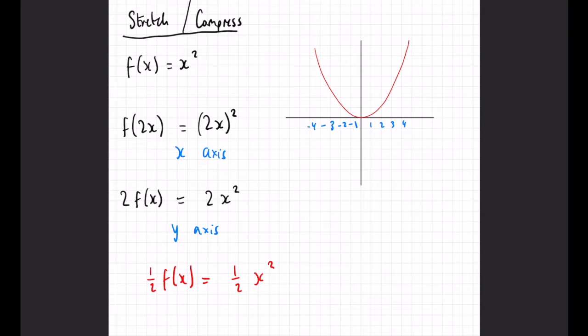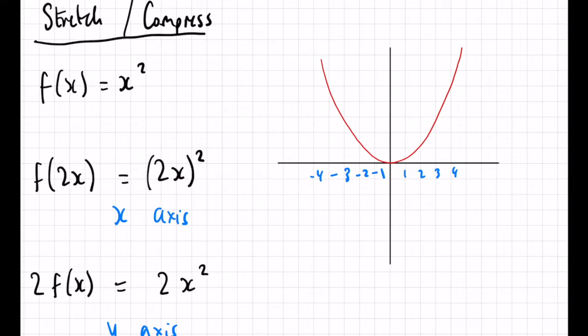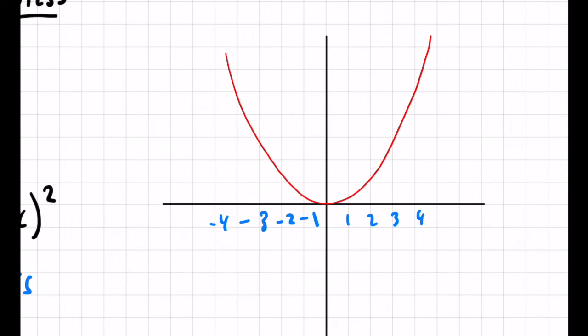Likewise, if you had ½f(x), that would be ½x². All the y values in those coordinates would be halved, so the x values would still be the same. Your graph would just be a lot flatter, not as steep, and it would look a bit like that.